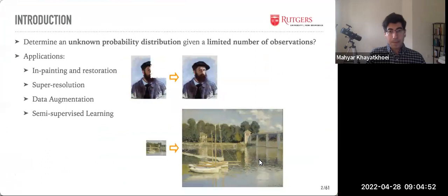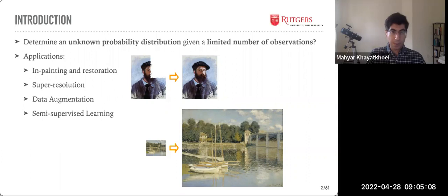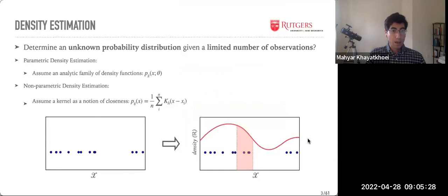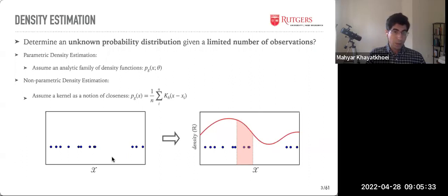I'll start with a quick overview of distribution learning and how GANs fit into this picture. The main problem is we want to determine an unknown probability distribution given a limited number of observations from it. Applications include filling in missing parts of a partially complete image, constructing a high resolution image from a low resolution observation, or complementing and growing a small data set by finding the underlying distribution of data.